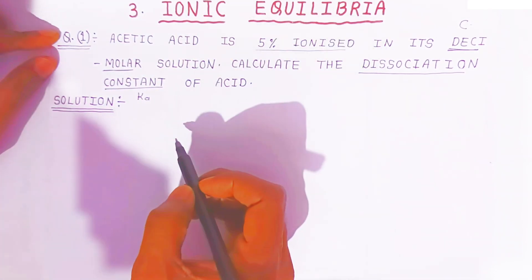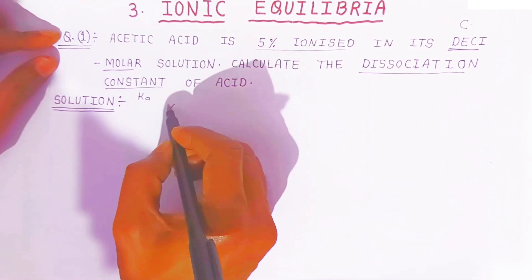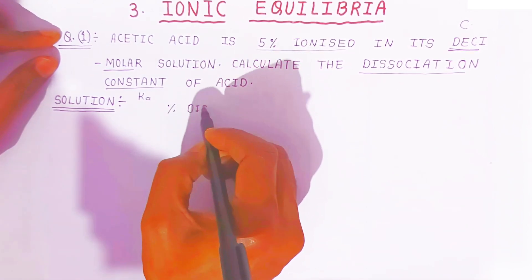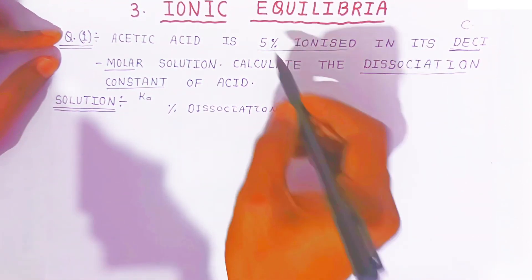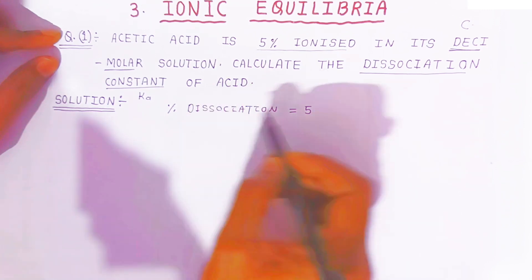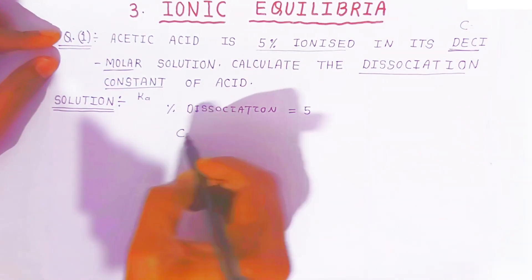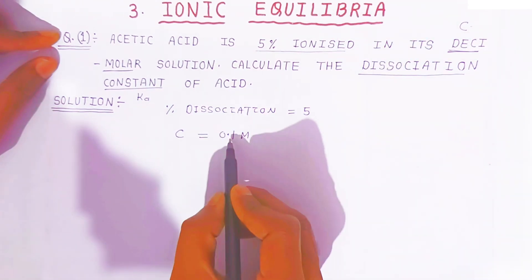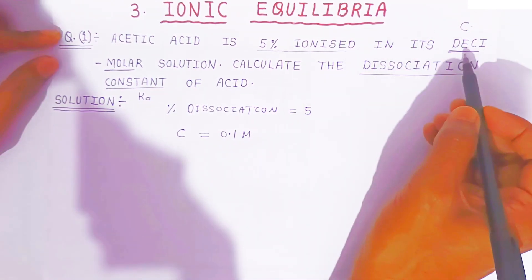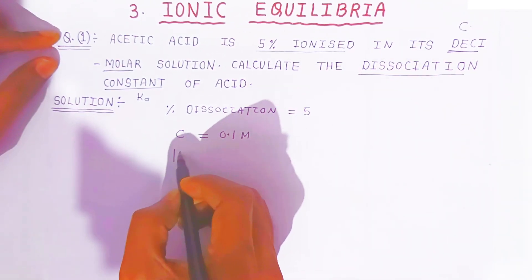So, what is given? First, percent dissociation is given, that is equal to 5. And concentration is also given — that is 1 molar divided by 10, that is 0.1 mol, which is called decimolar. We have to calculate the dissociation constant, that is the value of Ka.